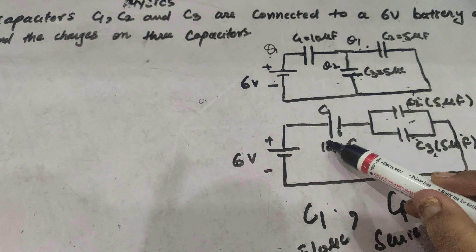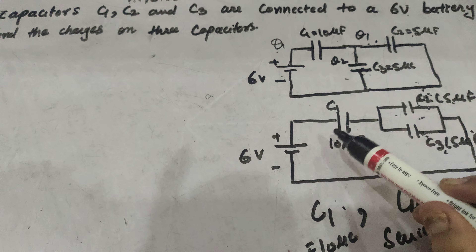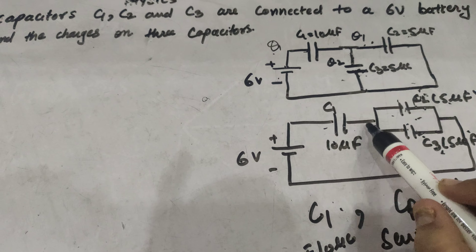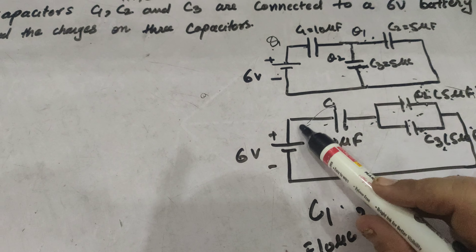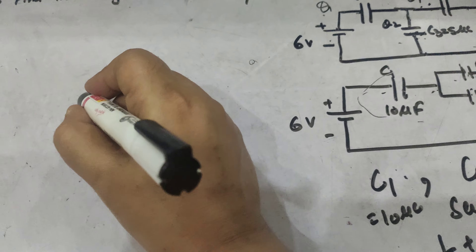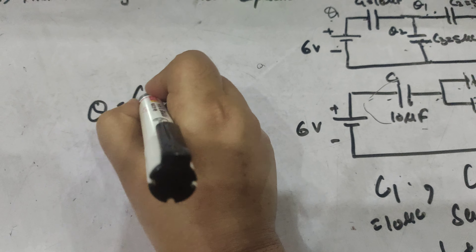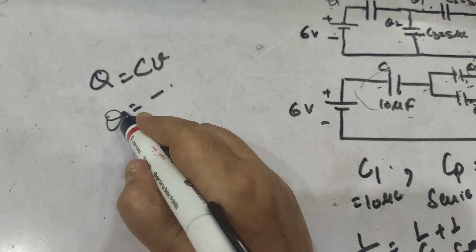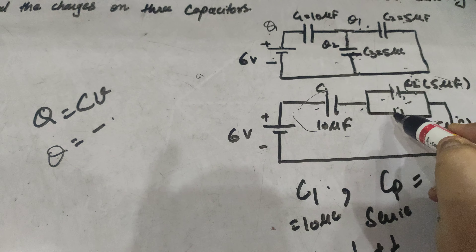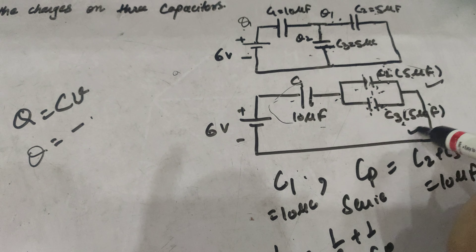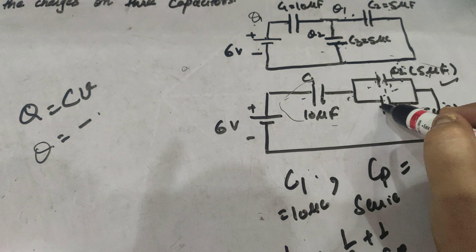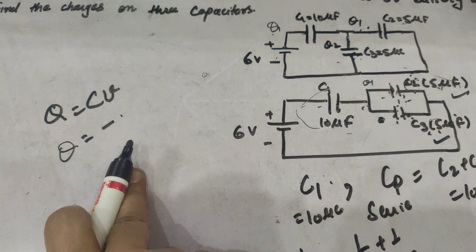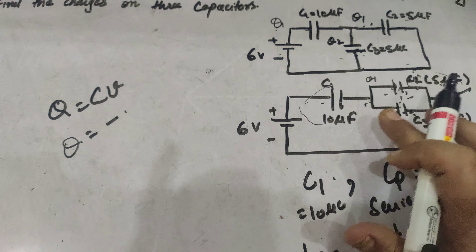Since C1 is in series with the parallel combination of C2 and C3, the charge on C1 equals the total charge Q for the combination. The charge for the combination is calculated using Q equals C times V, where Cs is what we calculated and V is six volts. Since C2 and C3 have the same capacitance, the charge Q is equally divided — Q by 2 to each. By substituting the value of Q, you can find the charges on each capacitor.